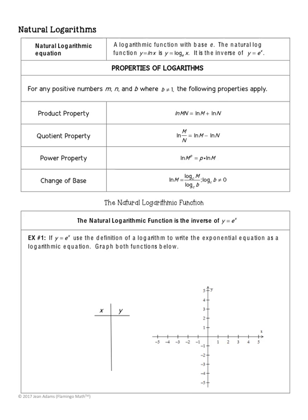Today we're going to look at lesson 7-6: natural logs. A logarithmic function with base e is your natural log. There's not a whole lot of difference between a regular log and a natural log. The natural log looks like this: ln of x, and it's the same thing as log base e of x. It's also the inverse of y equals e to the x. If we convert it to exponential form, the base is e, so it'd be e to the y equals x. Remember, with the inverse you switch the x and the y.